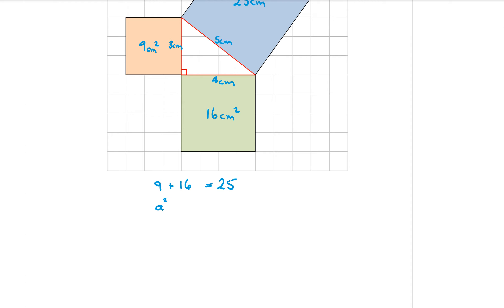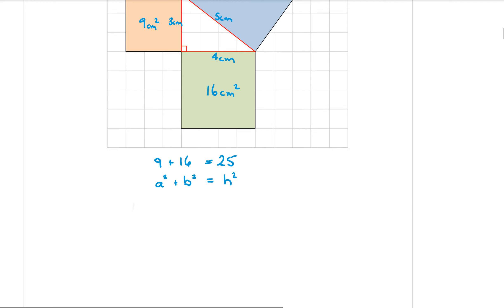So that is basically saying my shorter side, a squared, and my other shorter side, b squared, is equal to the hypotenuse squared. And that there is Pythagoras' theorem. That was the rule that he came up with.